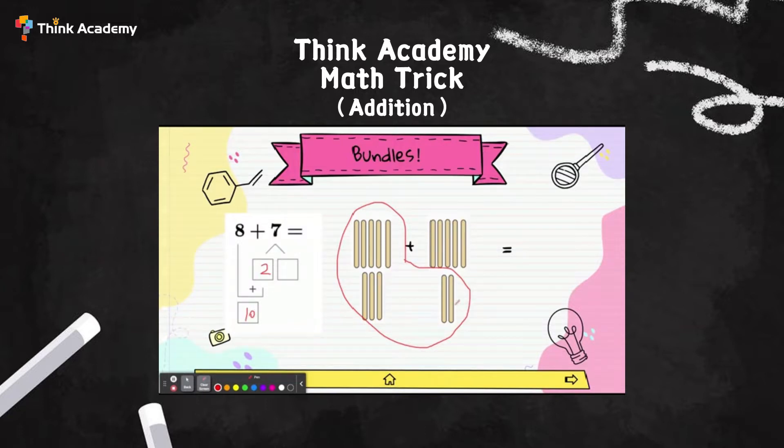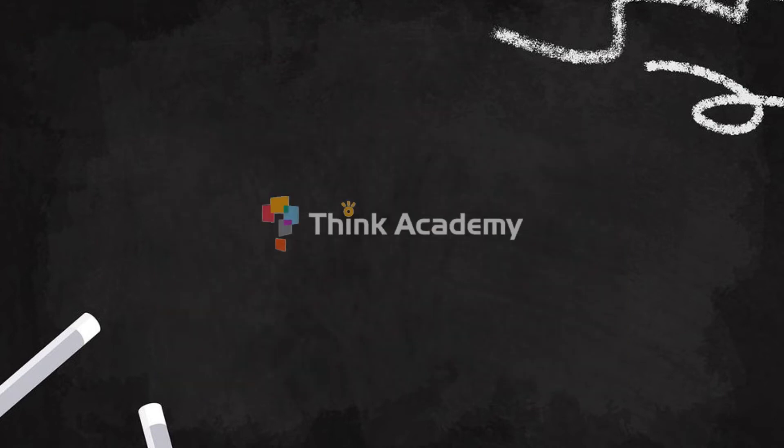What is left with the 7? I have 5 more left over here. So now I just need to calculate 10+5. 10+5 equals 15. Very great job learning the bundle method and finding the round number 10 with me.